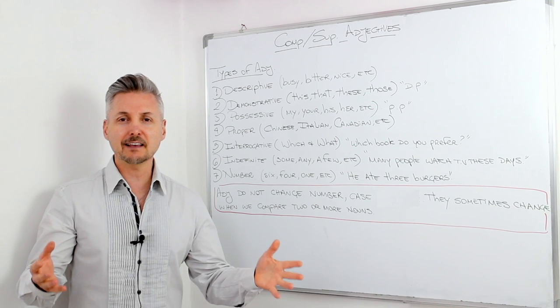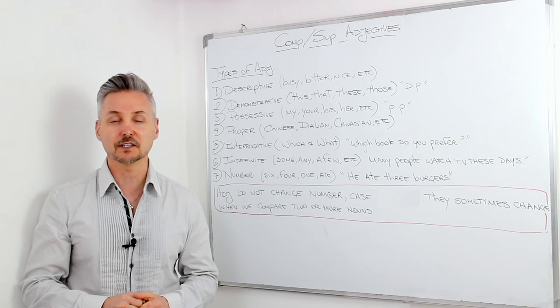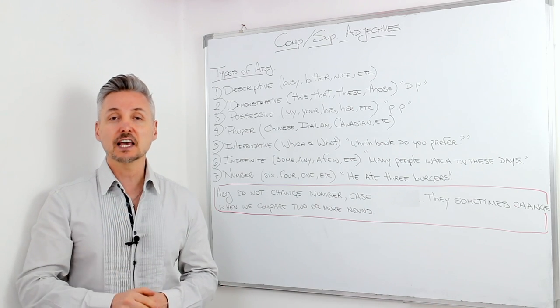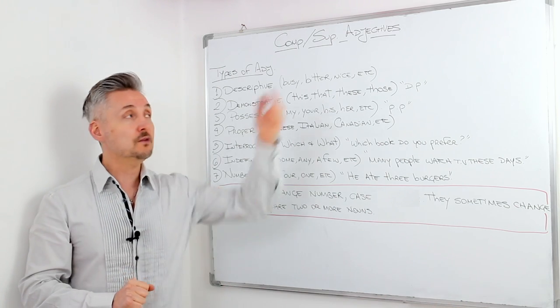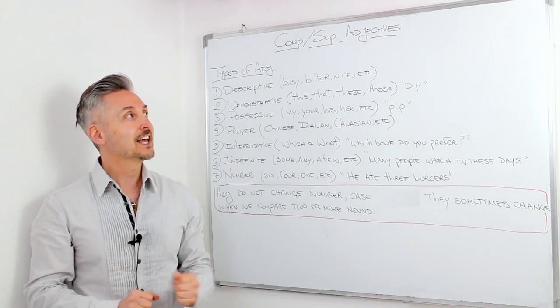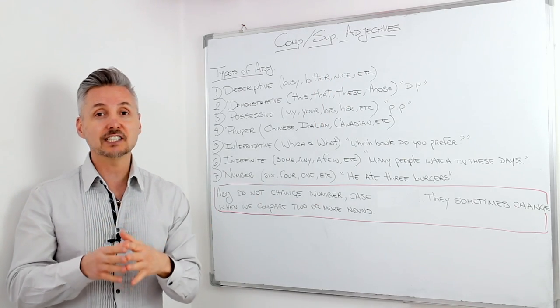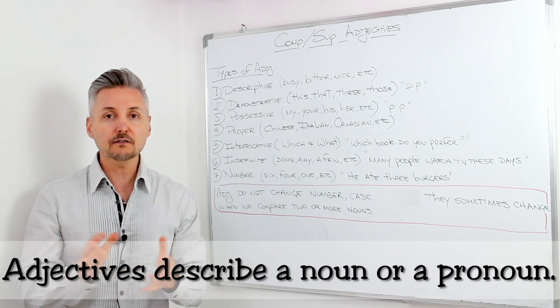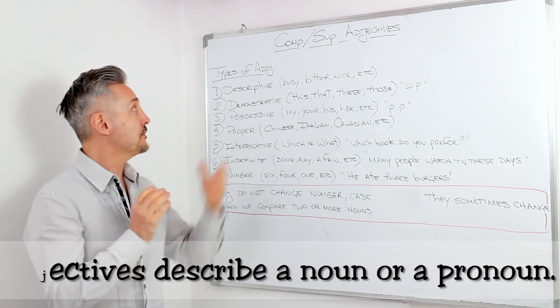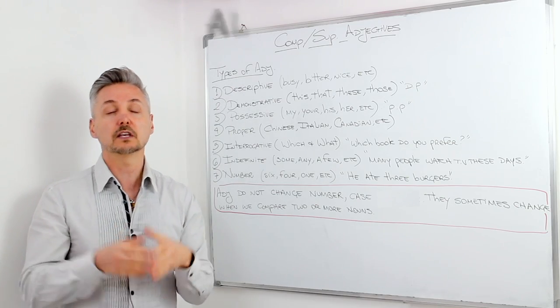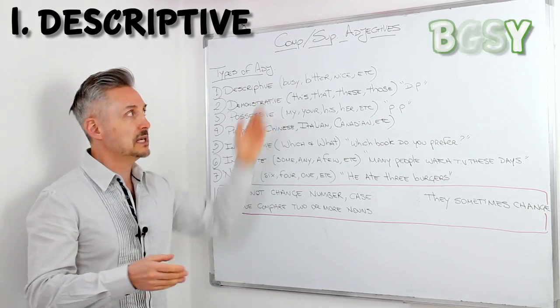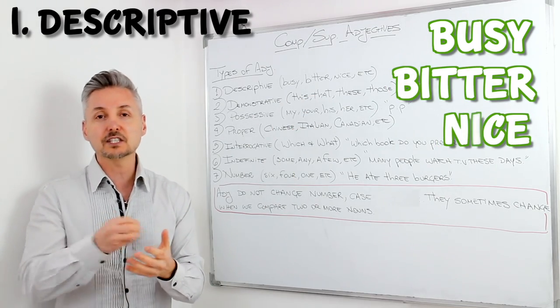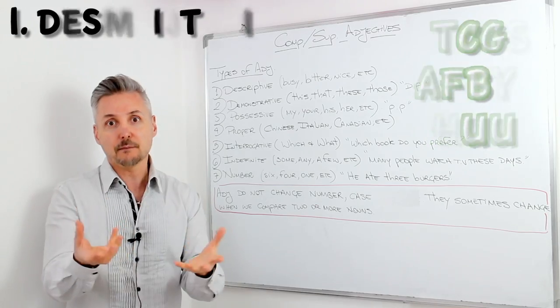Let's look at comparative and superlative adjectives. Let me tell you first that I have a lesson on adjectives. If you want to watch that lesson, you may click here. Now, let me remind you that adjectives describe a noun or a pronoun. And there are a lot of types of adjectives. The first one is called the descriptive one, like busy, bitter, nice, etc. The ones that describe the noun or the pronoun.